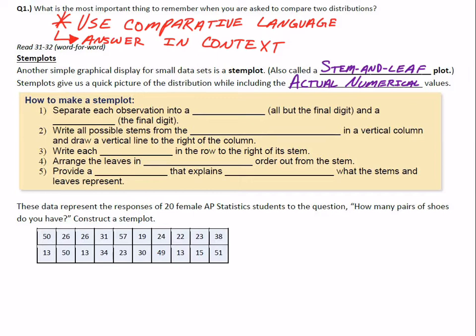So the steps to make a stem plot—they're not overly difficult. First, separate each observation into a stem, which is all but the final digit, and a leaf, which is actually the final digit.